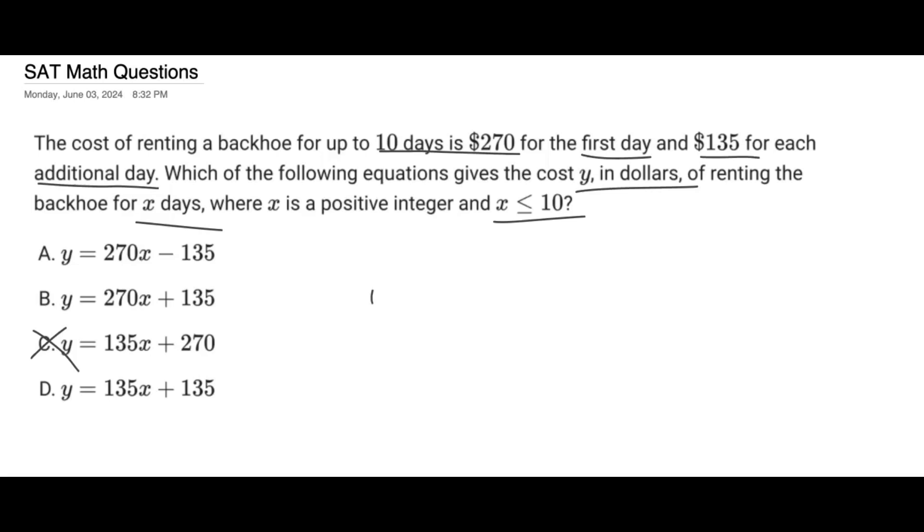So if you think about it, Y is the cost in dollars. And we know, because it tells us it's $135 for each additional day. So each day is going to cost $135. And it says, renting the backhoe for X days, so X is represented by the number X. So it's 135X.